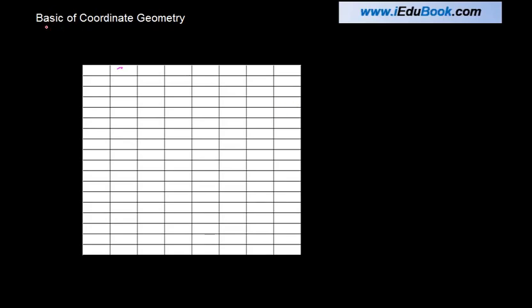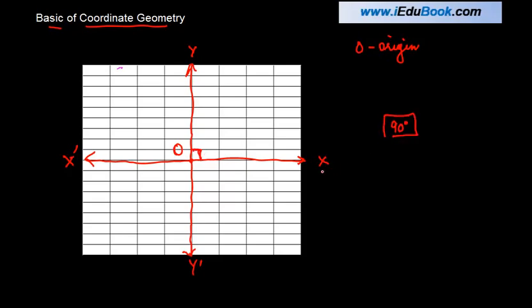Let us today understand some of the basics of coordinate geometry. Let us draw two lines - let's call this line x x dash, this line as y y dash, and at the point of intersection be known as O where O stands for the origin. These two lines x dash O x and y dash O y are perpendicular to each other, so these angles are referred to as 90 degrees.